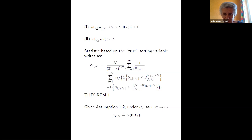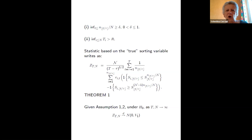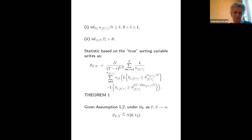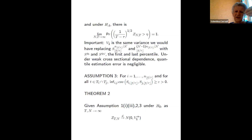What is our statistic without error? We simply take the returns summing over tau days, while the sorting variable is summed over months since we rebalance on a monthly basis. We compare the average in the estimated top quantile minus the average in the estimated bottom quantile. Under these assumptions, the statistic is asymptotically normal, clearly diverges under the alternative, and crucially — in the weak cross-sectional correlation case — quantile estimation error doesn't matter.